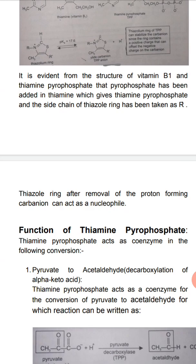Thiamine pyrophosphate acts as a coenzyme, in which the thiamine ring after removal of a proton forms a carbanion that can act as a nucleophile, as discussed earlier. The active part of thiamine pyrophosphate is the thiazol ring. We have now discussed the structure in detail, and will now discuss the function of thiamine pyrophosphate. It acts as a coenzyme in the following conversion.